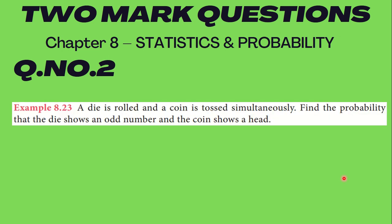Let us go to question number 2, example 8.23. A die is rolled and a coin is tossed simultaneously. Find the probability that the die shows an odd number and the coin shows a head. Please make note of that and read accordingly.